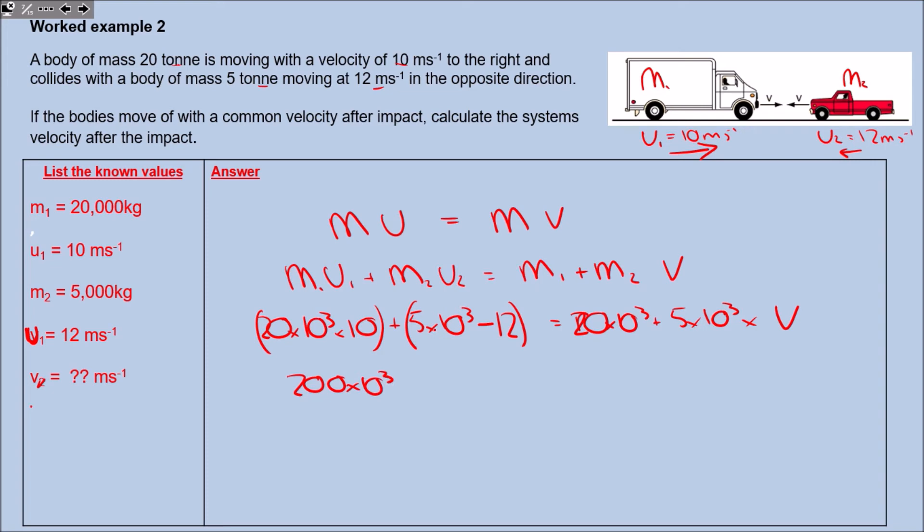You can leave those 10 to the threes off when doing these and just make sure you add them in at the end. So v equals 200 times 10³ minus 60 times 10³ divided by 25 times 10³. So v in that case is going to equal - you've got it - 5.6 meters per second.